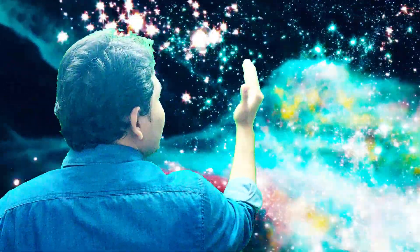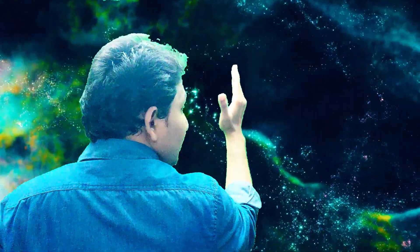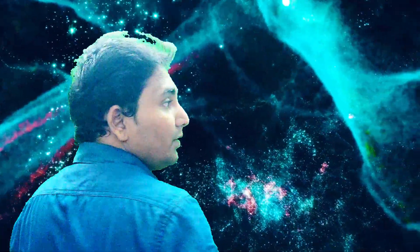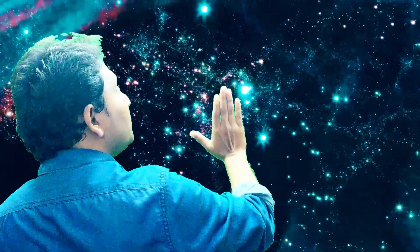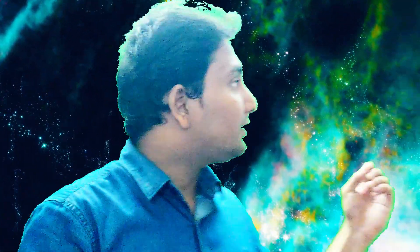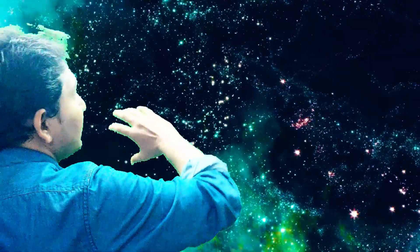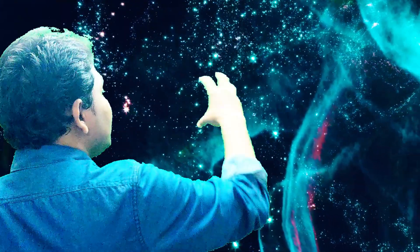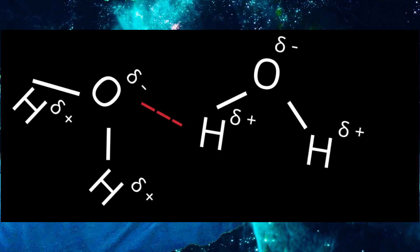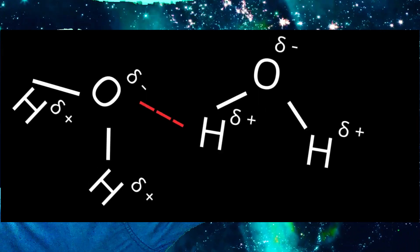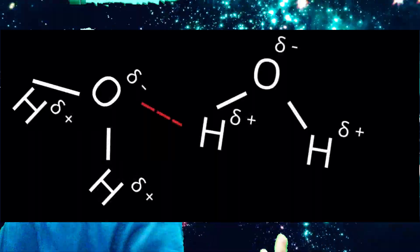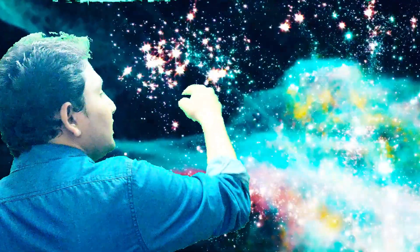There are also forces between the water molecule and the wall of the plant, which help water move up the plant. Cohesive forces arise because water has intermolecular forces. These intermolecular forces are formed because of the polarity of water — oxygen is in the middle and two hydrogen atoms are covalently bonded to it. Oxygen is slightly electronegative and hydrogen is slightly positive.